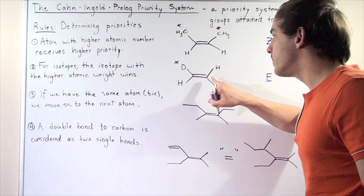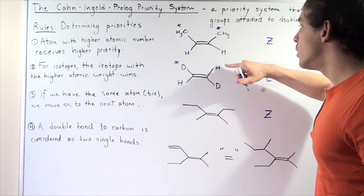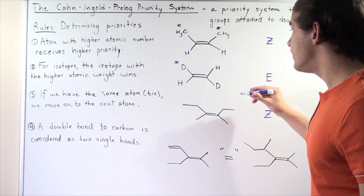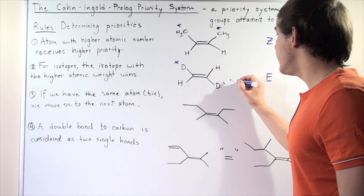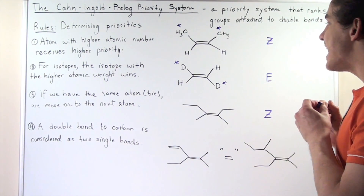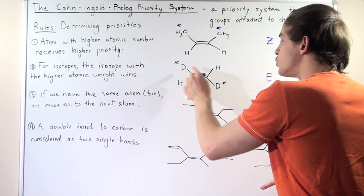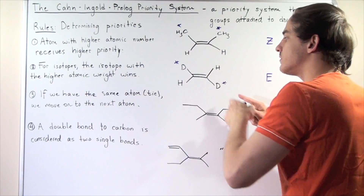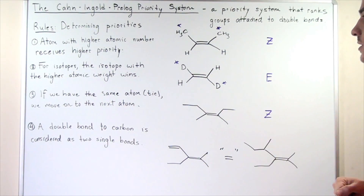Likewise, for the second carbon in the double bond, we again have H and D. The deuterium has a higher atomic weight, so it has a higher priority. Now we have an alkene where the two higher priority groups are on opposite sides of the double bond, which means this must be an E isomer.